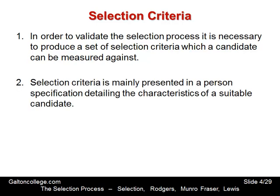The selection criteria is mainly presented in a person specification dealing with the characteristics of a suitable candidate. The person specification should talk about the motivation of the person, their application to the job, their interest in work, and the company's requirements in terms of timekeeping, training, and willingness to participate in training programs and be involved in the life of the company. It's a set of points that indicate who in particular the company is looking for.